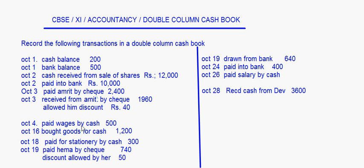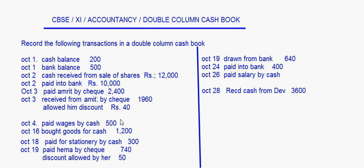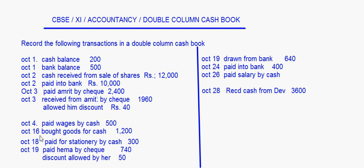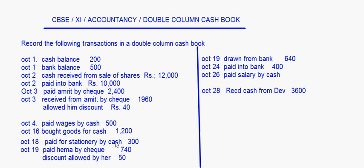October 4th: paid wages by cash rupees 500. Write 'by wages account' in the cash column as 500. October 16th: bought goods for cash — this is purchases, so write 'by purchases account' and the amount is 1,200 in the cash column. October 18th: paid for stationery by cash 300 — write 'by stationery account' as 300 in the cash column.